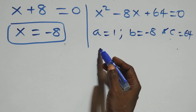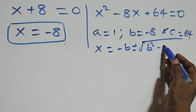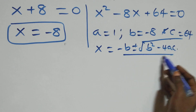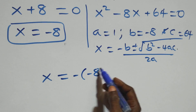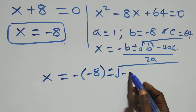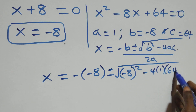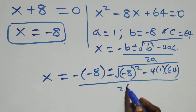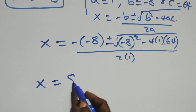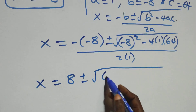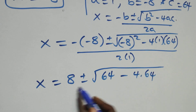Applying the quadratic formula, x equals to minus b plus or minus square root of b² minus 4ac, all over 2a. What we have becomes x equals to minus(−8) plus or minus square root of (−8)² minus 4 times 1 times 64, over 2 times 1. That is, x equals to 8 plus or minus square root of 64 minus 4 times 64, all over 2.